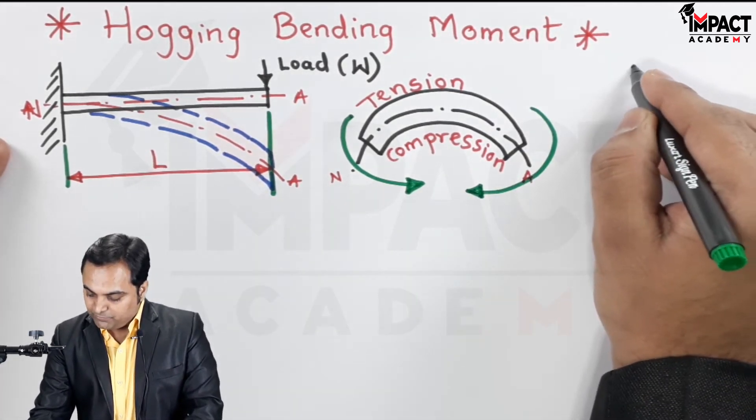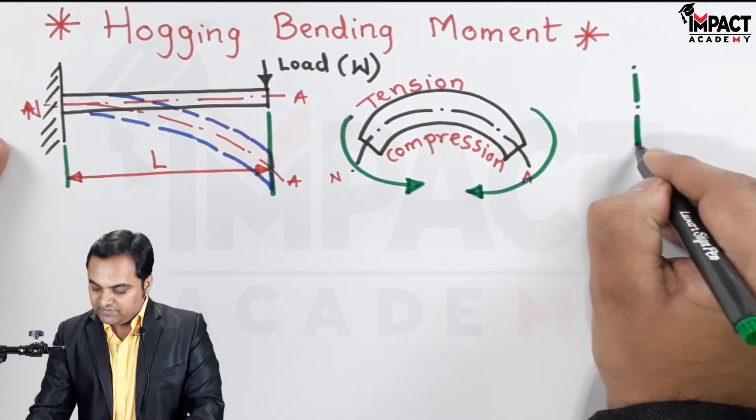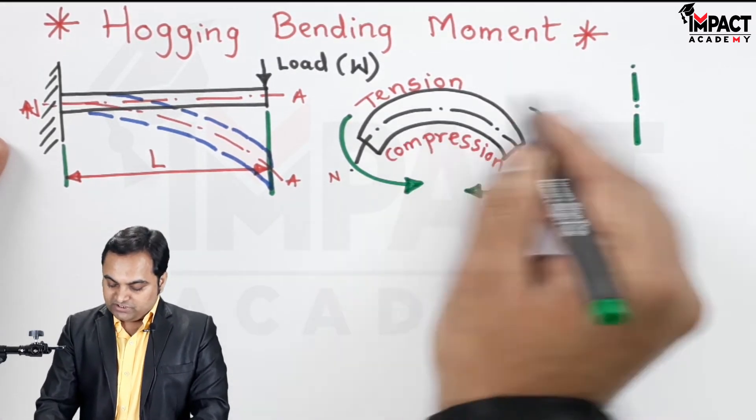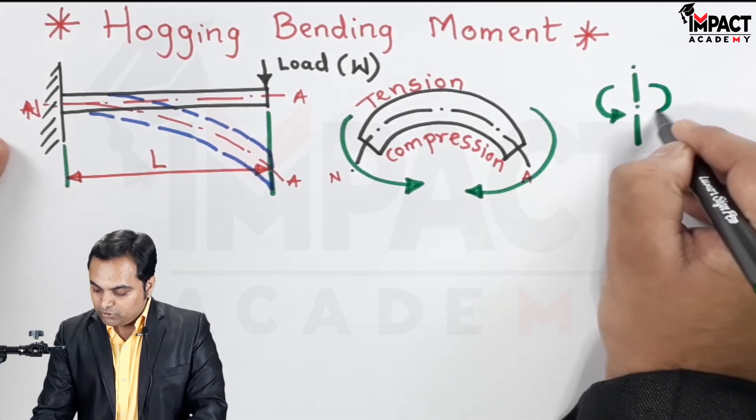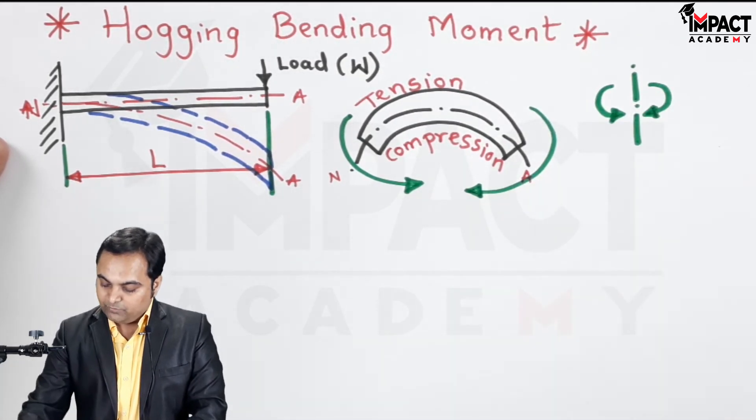And the convention for the hogging bending moment is when we take the section onto the beam, towards the left of the section there is an anti-clockwise moment and onto the right there is a clockwise moment. Hogging bending moments are treated as negative, these are the sign conventions.